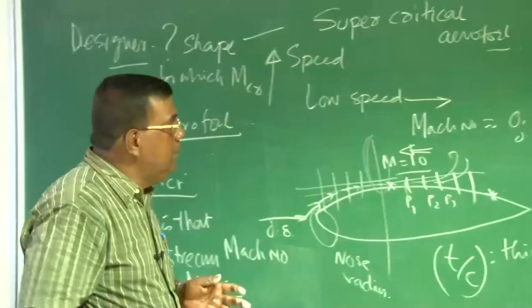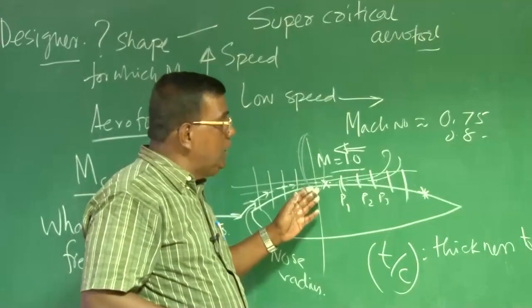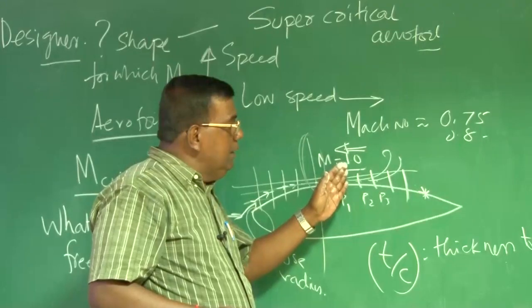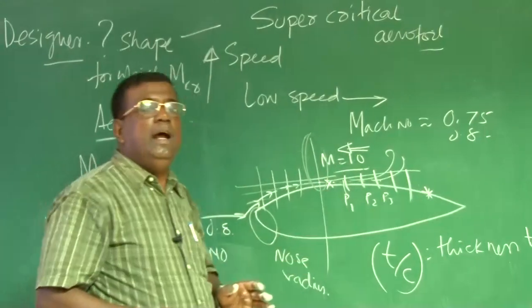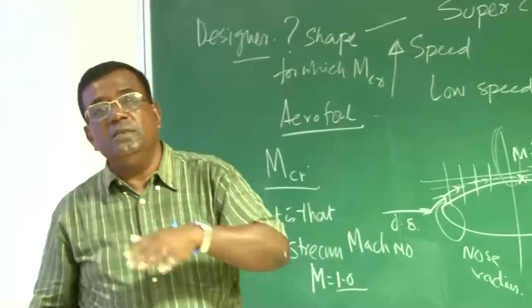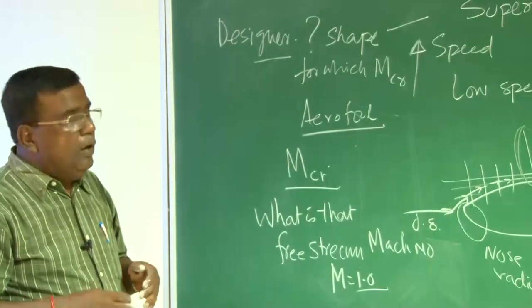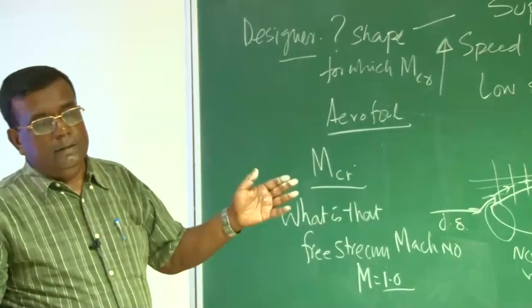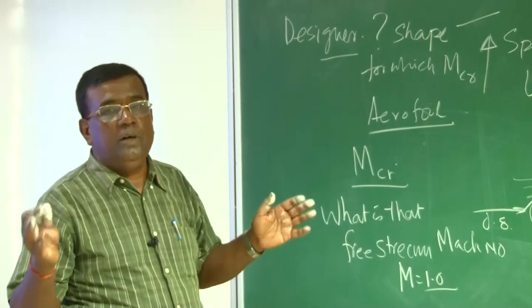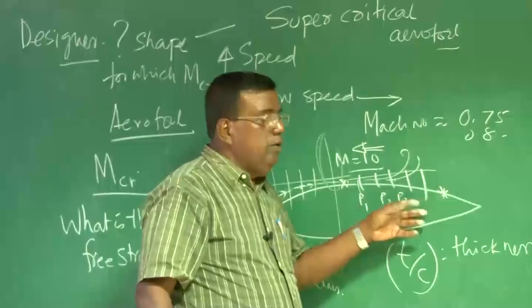If I want a laminar flow for a longer chord length, I like to ensure that for a longer length, the adverse pressure gradient should be handled properly. The pressure should not be adverse so that it doesn't make the flow separate.